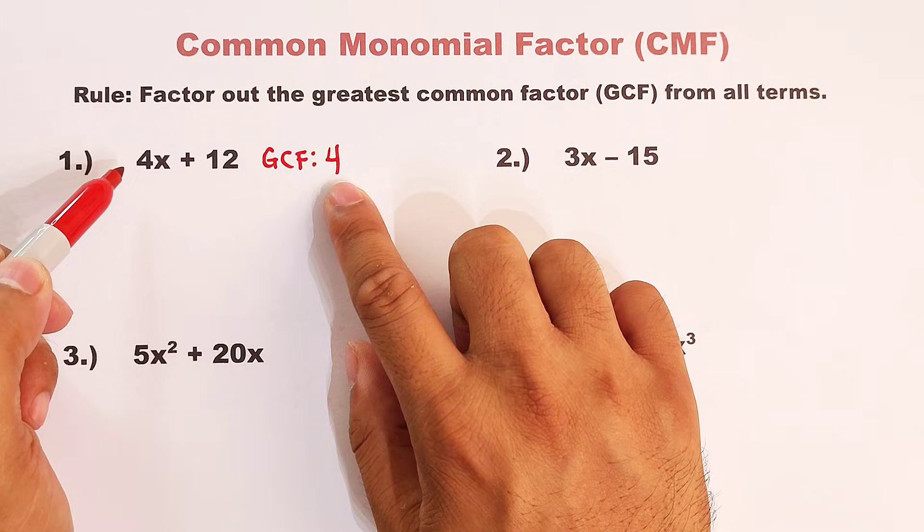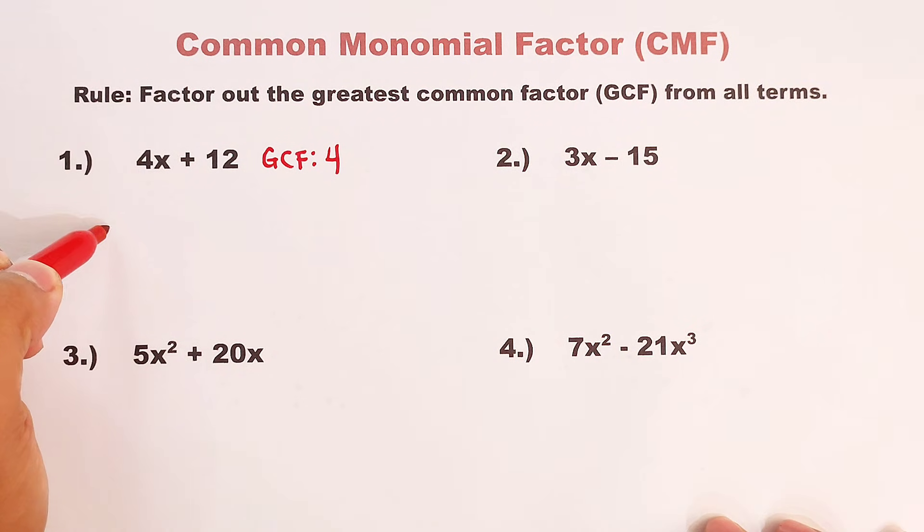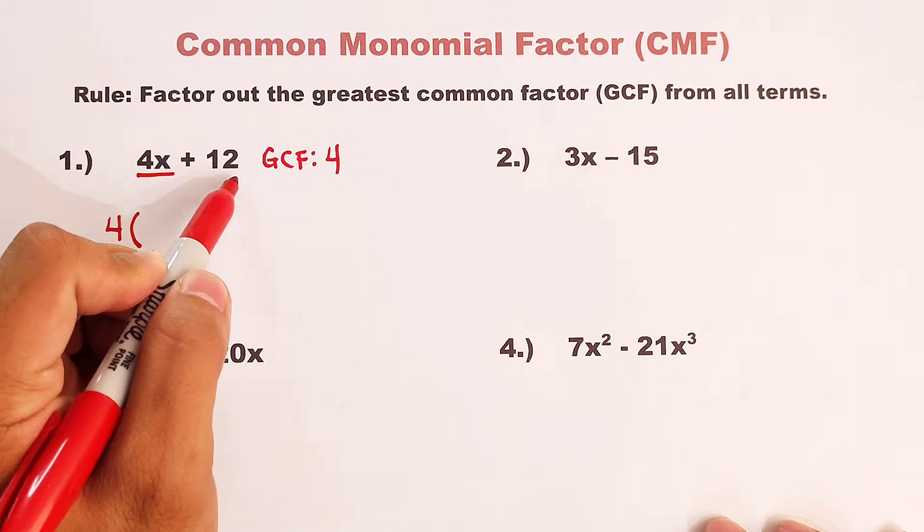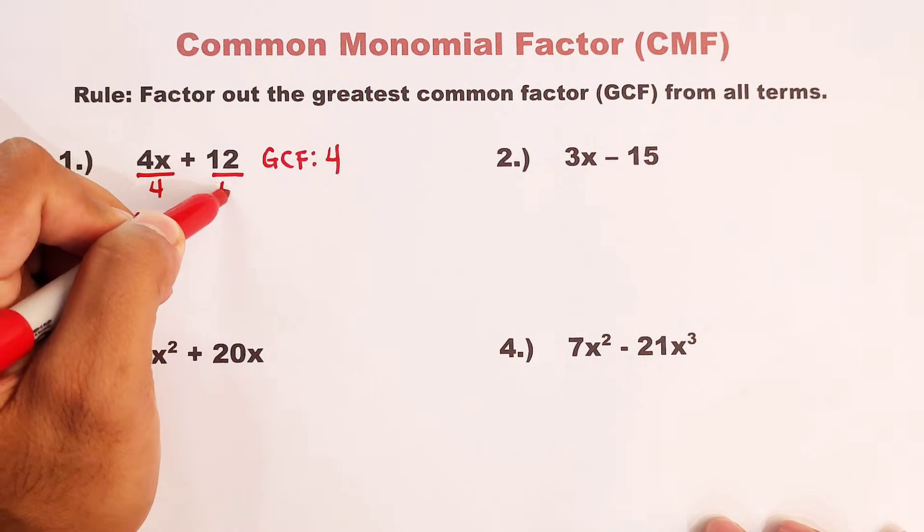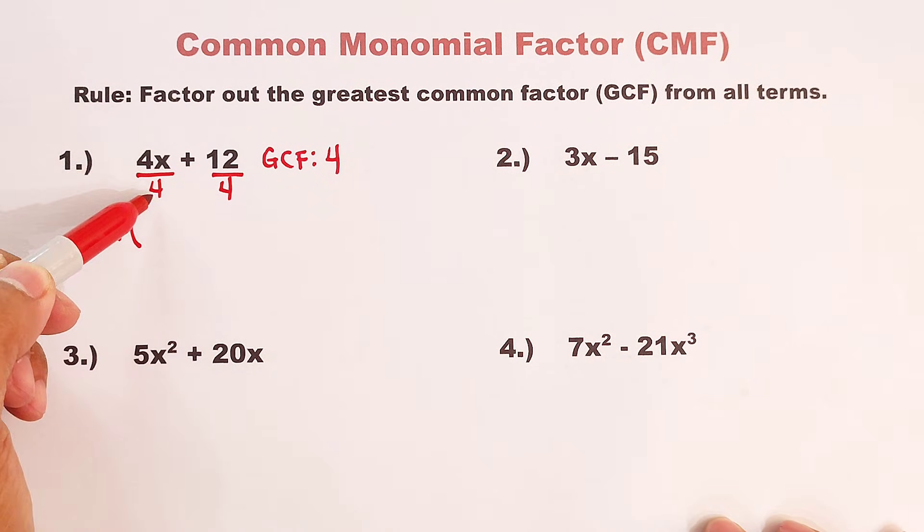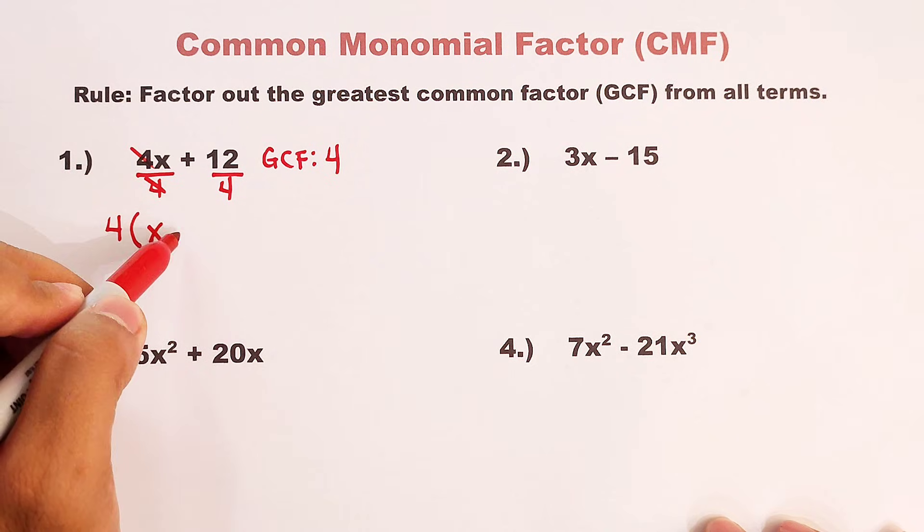So what's next? This is now considered as the greatest common factor of this polynomial. So you can start putting that GCF as the first factor. Now, how can we get the next factor? What we need to do is to divide each term by the GCF, which is 4. So 4x divided by 4, we can simply cancel this out. So we have the variable x. Next, 12 divided by 4, that would be plus 3.